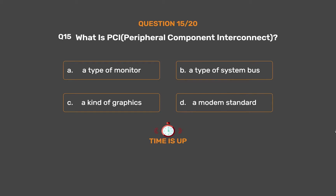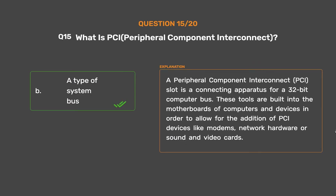The correct answer is Option B: A type of system bus. A Peripheral Component Interconnect (PCI) slot is a connecting apparatus for a 32-bit computer bus. These are built into the motherboards of computers and devices to allow for the addition of PCI devices like modems, network hardware, or sound and video cards.